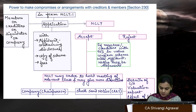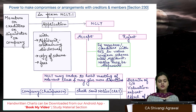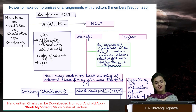Let's now revise the chapter of compromises, arrangements and amalgamation. In this chapter, we have sections 230 to 240. Not a very huge section, but sometimes students don't understand the underlying concept and hence they end up thinking that this is a very boring chapter.